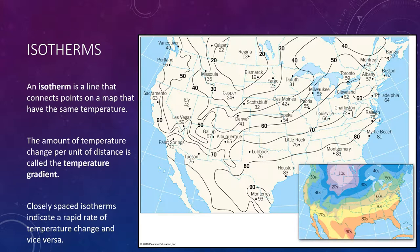Maps with isotherms are valuable tools because they make the temperature distribution visible at a glance. Areas of low and high temperatures are easy to pick out. In addition, the amount of temperature change per unit distance, called the temperature gradient, is easy to visualize. Closely spaced isotherms indicate a rapid change in temperature, whereas more widely spaced lines indicate a more gradual rate of change. The isotherms are closer in Colorado and Utah, showing a steeper temperature gradient, whereas the isotherms are spread further apart in Texas, indicating a gentler change in temperature.